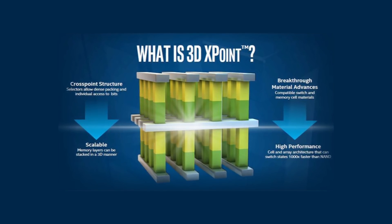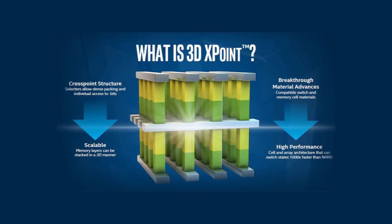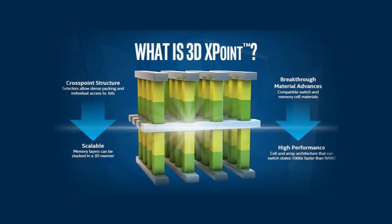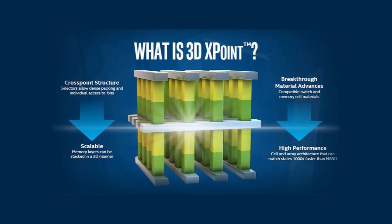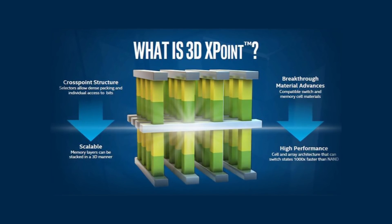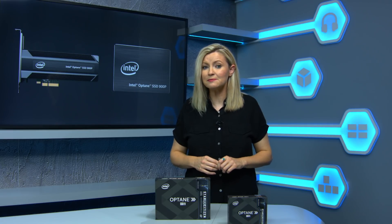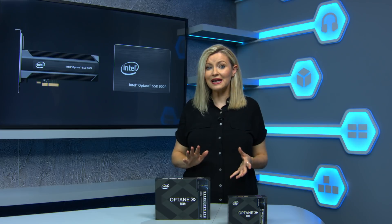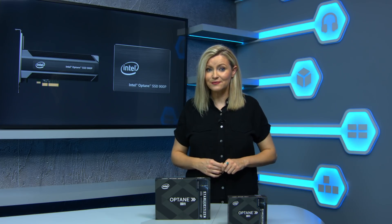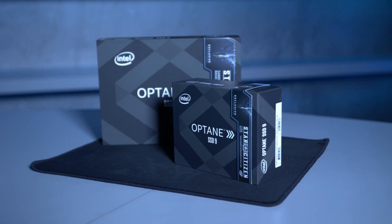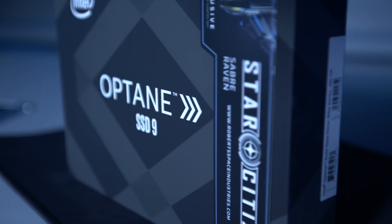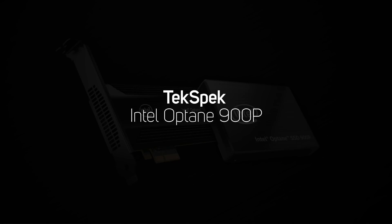3D Crosspoint stores data in individually accessible cells that are formed from an array of cells written to via a change in voltage. So unlike NAND, it doesn't have to refresh a whole page of memory, even if just a single bit is being written. As a result, 3D Crosspoint has much lower latency and greater endurance than NAND. While 3D Crosspoint has yet to make it into DIMMs, the first Intel SSDs using the new memory technology are now available, and are known as the Optane 900p series.